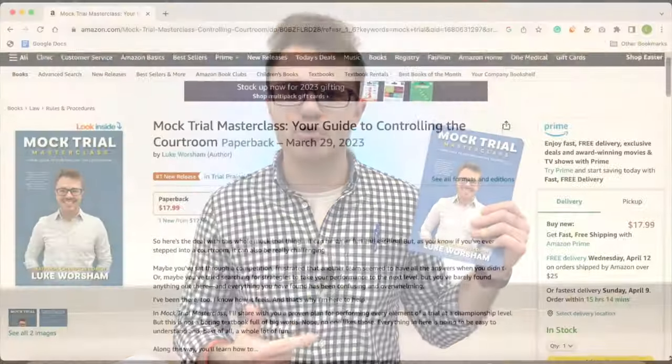which you can buy a copy of on Amazon by clicking the link in the description on YouTube or in the show notes on podcast platforms. Because there's a whole chapter in here on making objections and arguing them well, but there's also a whole chapter on the rules of evidence. It's the longest chapter in the book, and I think it's the best breakdown out there, simplified,